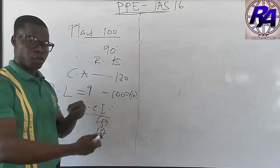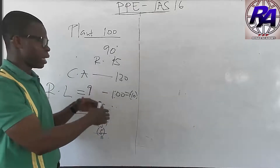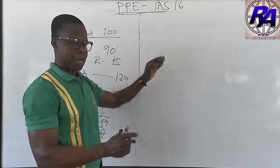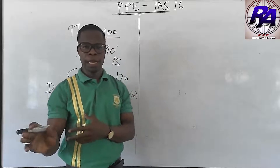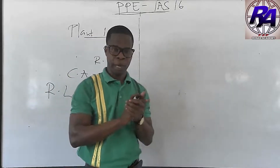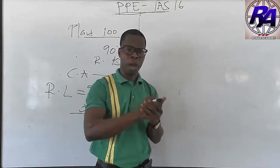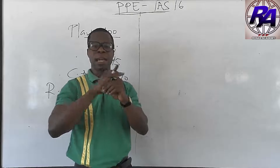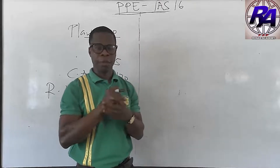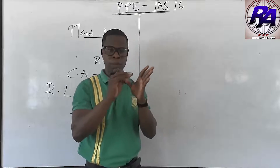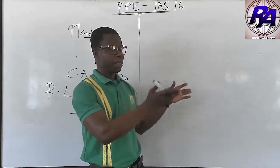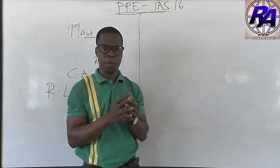Revaluation should be done at the end of every period. Remember that land and building are separate items. Land is not depreciated because it has an infinite useful life — there is no limitation on its useful life. We do, however, revalue land when required. Buildings are depreciated. That is a brief summary of property, plant and equipment under IAS 16.